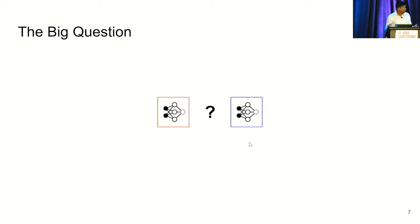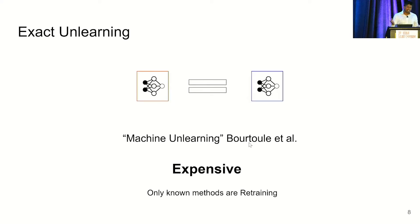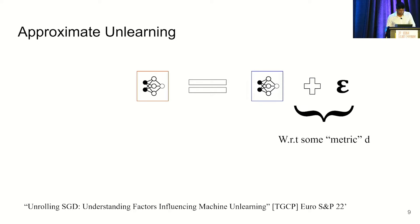Okay, with some agreed-upon notion of what a model is, the question is how should the output of unlearning relate to retraining? And so the first answer is that the output of unlearning should be exactly the same as retraining. But in practice, this is very expensive. And the only known methods are variations of retraining. So trying to move away from the cost of retraining, we might ask, instead of exactly reproducing the models, we do so with some error in some predefined metric. And I'd recommend one of my other papers for a more detailed discussion about different unlearning metrics.